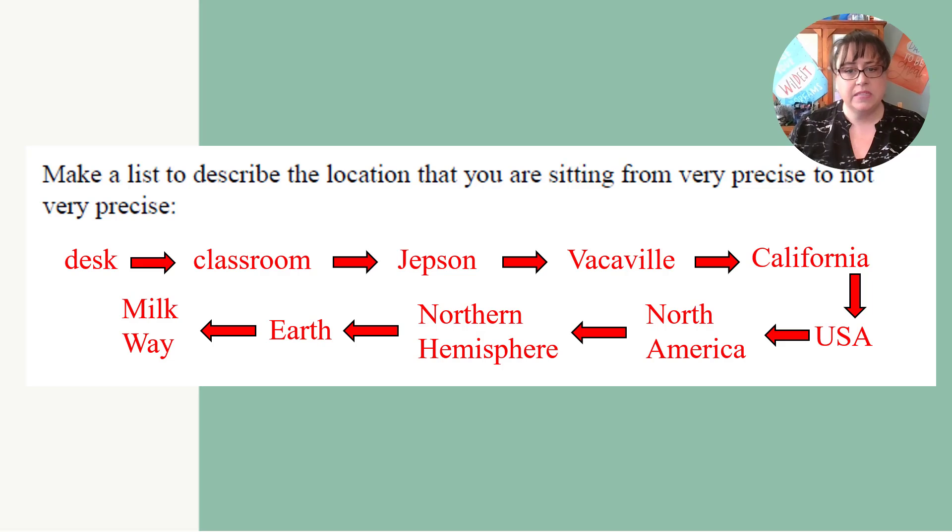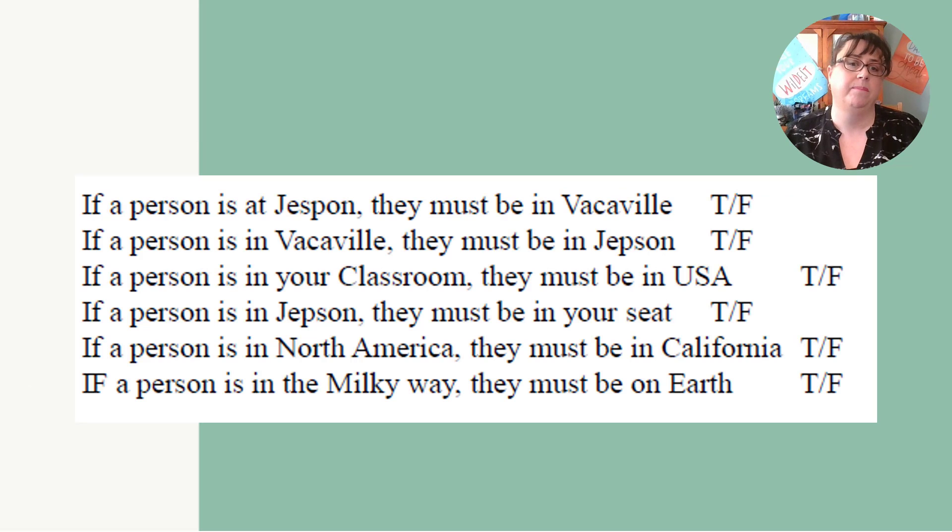So now that we have this list in place, let's answer some questions. True or false, if a person is at Jepson, then they must be in Vacaville. Is that true or false? Well, that is true. Since Jepson is a place in Vacaville, they have to be in Vacaville. So this is almost like writing an address, right? I think of Harry Potter. Harry Potter lived under the stairs, right? That was his address.